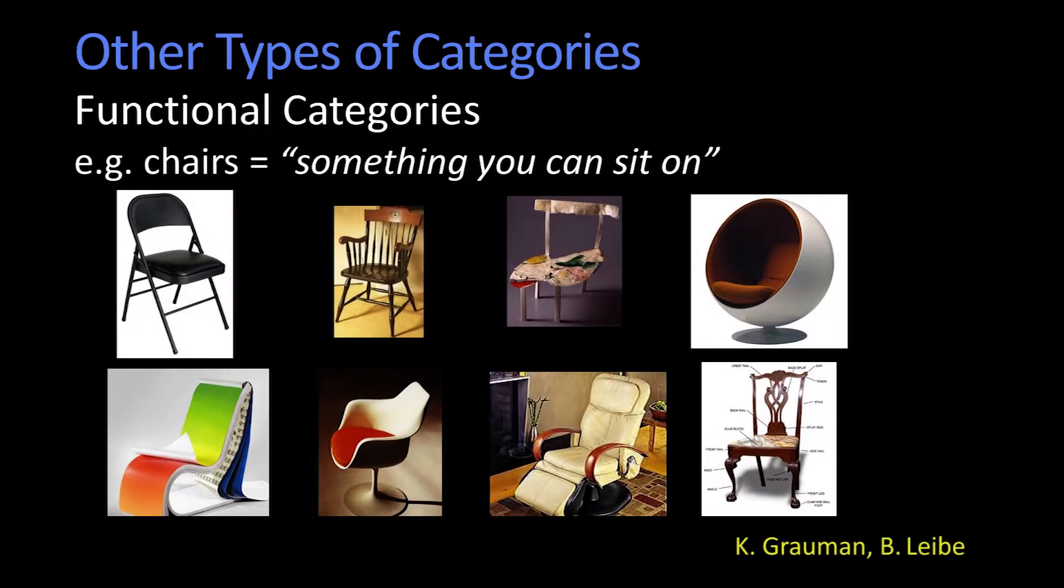There are, by the way, other types of categories, other than just natural categories. So for example, you think about functional categories. Here's a set of chairs. And yes, you can sit in all these things, although some of them look like they would be kind of stunningly uncomfortable, but they don't really share a visual property. So you can imagine that semantically in your head, you know that they have a certain relationship. But from a recognition perspective, it's not clear that the same process that recognizes this as a chair should also recognize that as a chair.